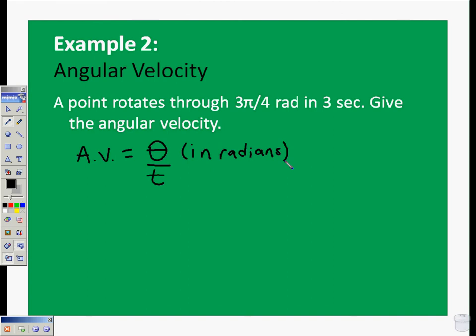Okay, so this one's pretty straightforward. We have 3 pi over 4, and that's our theta. And if we're going to divide that by the number of seconds, it's 3 seconds. That's over our time.